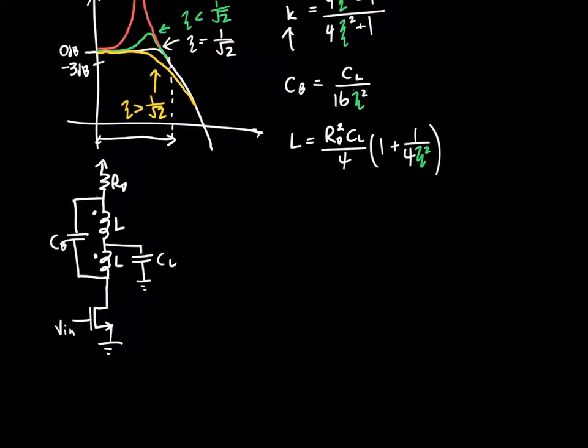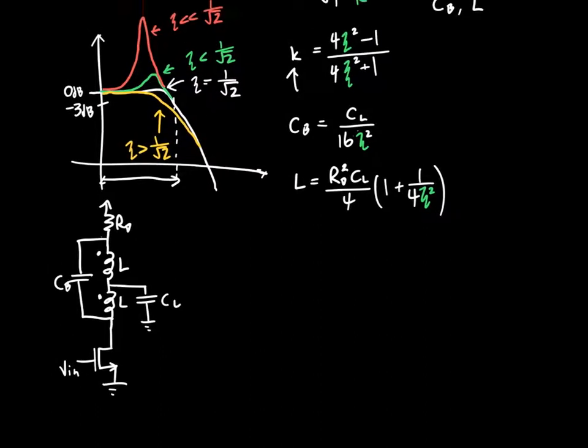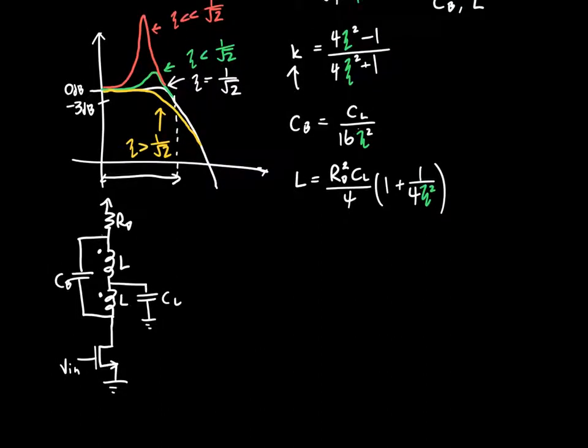And that's great. So we're essentially done with this circuit. So once we determine a certain zeta, we know what l has to be, we know what cb has to be. Cl, we generally don't get to choose. That's generally determined by the next stage of our amplifier. Rd, we don't get to choose because that will be given by our required dc gain. So we're done. So let's just do a simple example. Let's say that we do want maximum bandwidth.